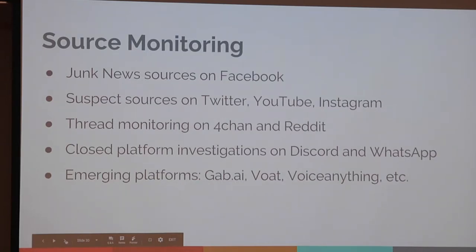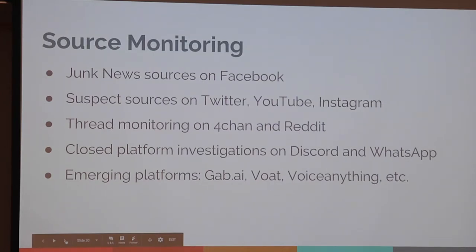To summarize source monitoring: at the moment we monitor junk news sources on Facebook and have suspect sources on other platforms. We're doing thread-level monitoring on 4chan and Reddit — primarily the /pol/ thread on 4chan, /Donald/, and a few others on Reddit. We're also developing investigations into Discord, WhatsApp, and other closed networks, as well as emerging platforms. In a lot of cases people are leaving mainstream platforms for fringe, alternative, or so-called 'free speech' platforms — which frequently means hate speech platforms where they're not likely to get banned.